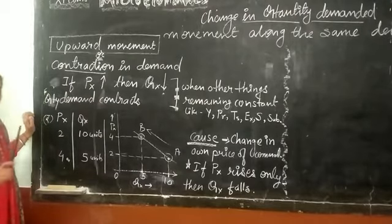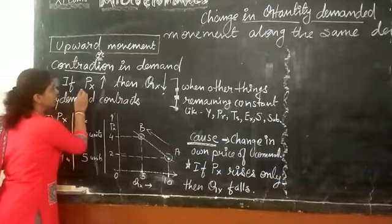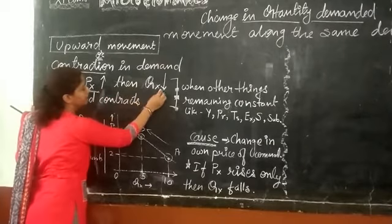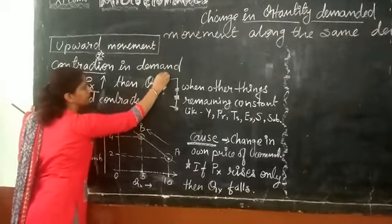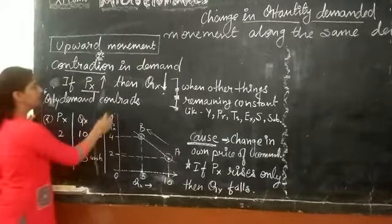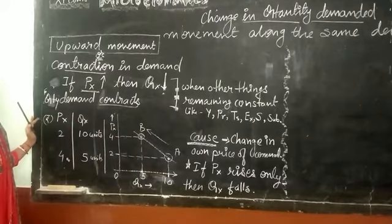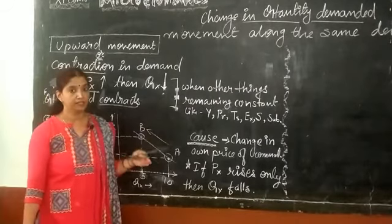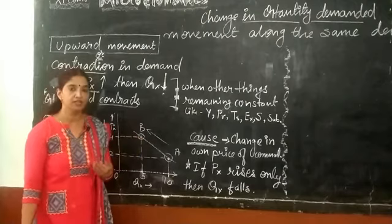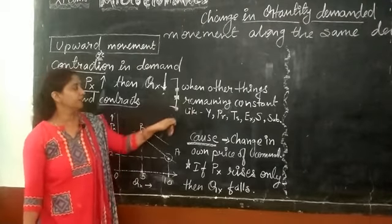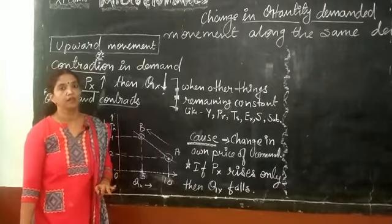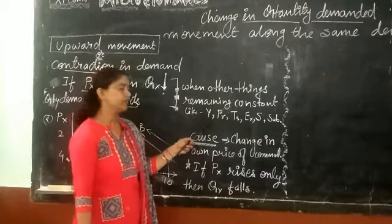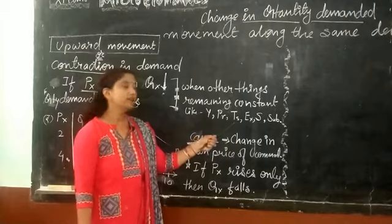If the price of commodity X rises, then quantity demanded for X falls, and this is called contraction in demand — we can say demand contracts. The other factors which may affect the demand, the determinants of demand, those factors should remain constant. All those factors which may affect the demand remaining constant — these factors are like income, price of related goods, taste, fashion.